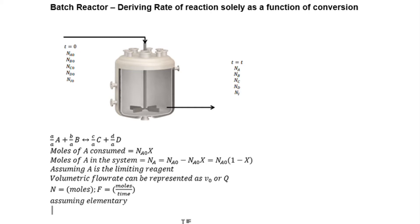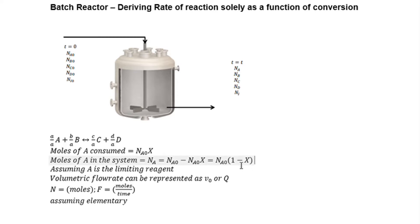Looking at this batch reactor here, we have a reaction of A plus B as reactants, which is irreversible and will give us C and D. We can represent the number of moles consumed in this format here, as derived earlier on. We can also express the final mole concentration at a particular time in this expression here. The aim is to express this in the form of its concentration and substitute it into a rate of reaction.